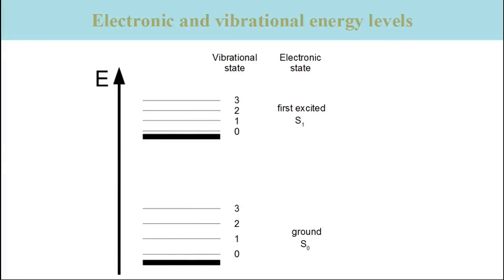The bold lines consider only the energy of the electrons, whereas the thin lines consider the total energy of electrons and nuclei together. The bold line on the bottom is for the electronic ground state, and the thin lines indicate a few of the vibrational levels belonging to it: the vibrational ground state, the first excited vibrational state, the second, the third, and so on. The thin lines are drawn with respect to the electronic energy level — in other words, the vibrational energy is added to the respective electronic energy. There are many more levels not shown to avoid confusion.